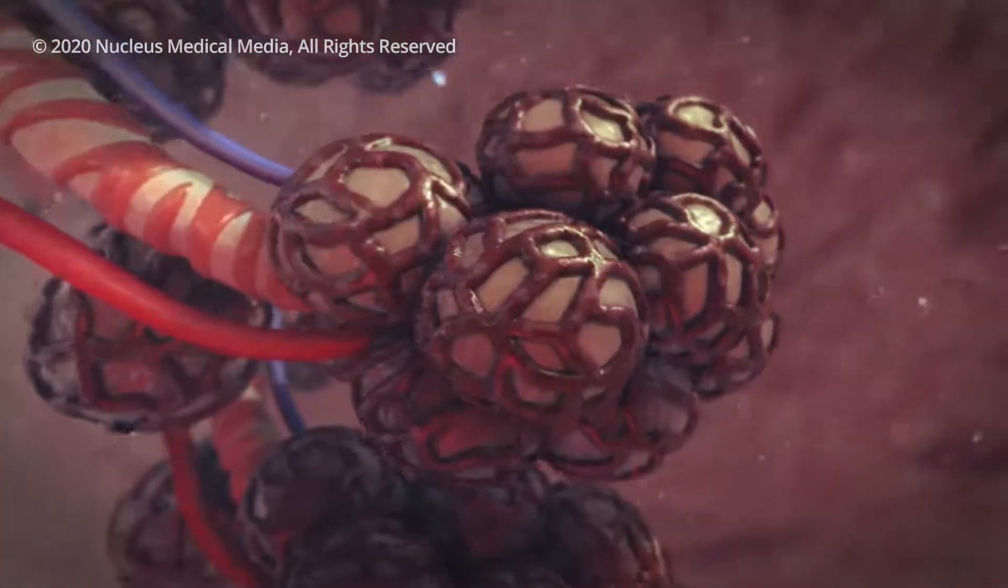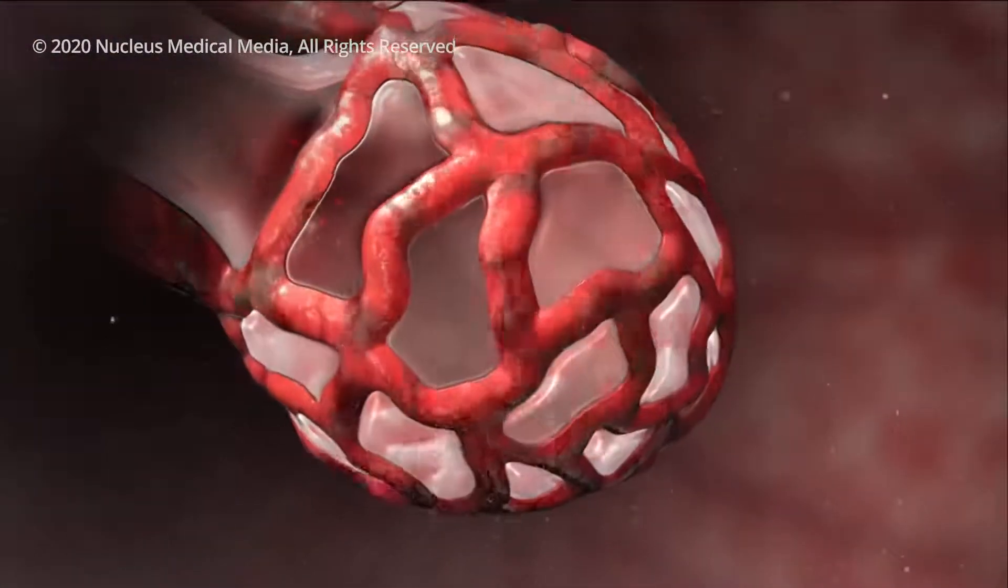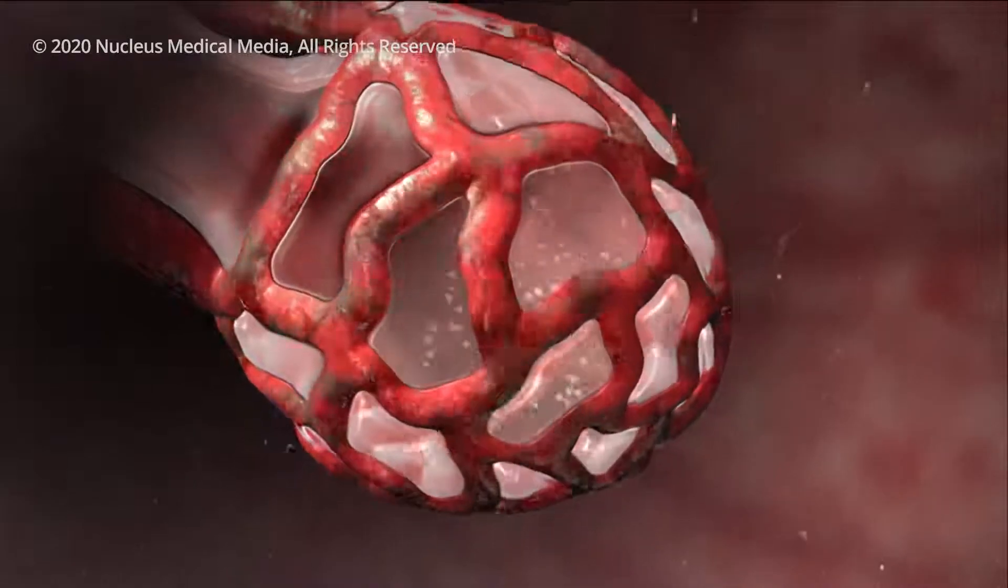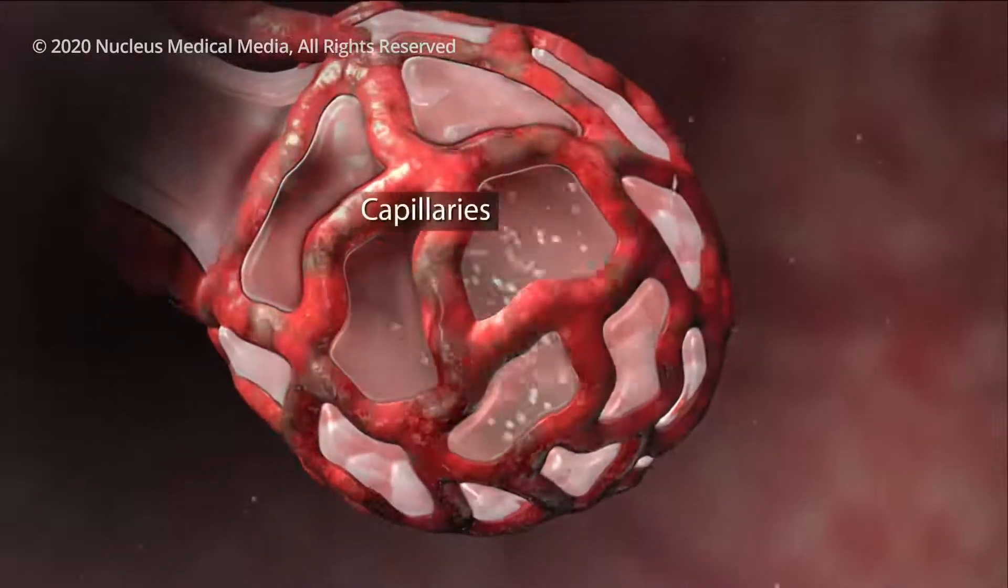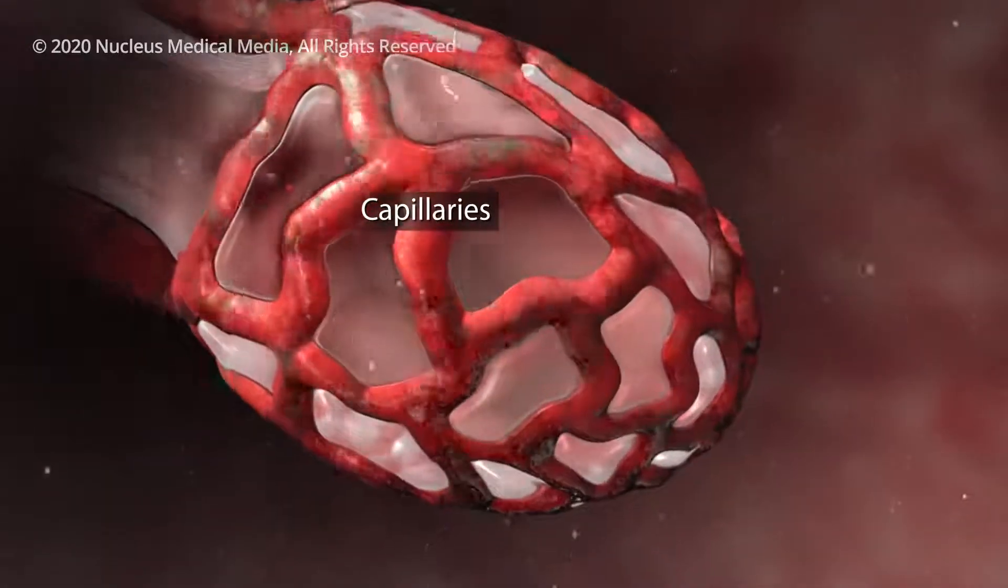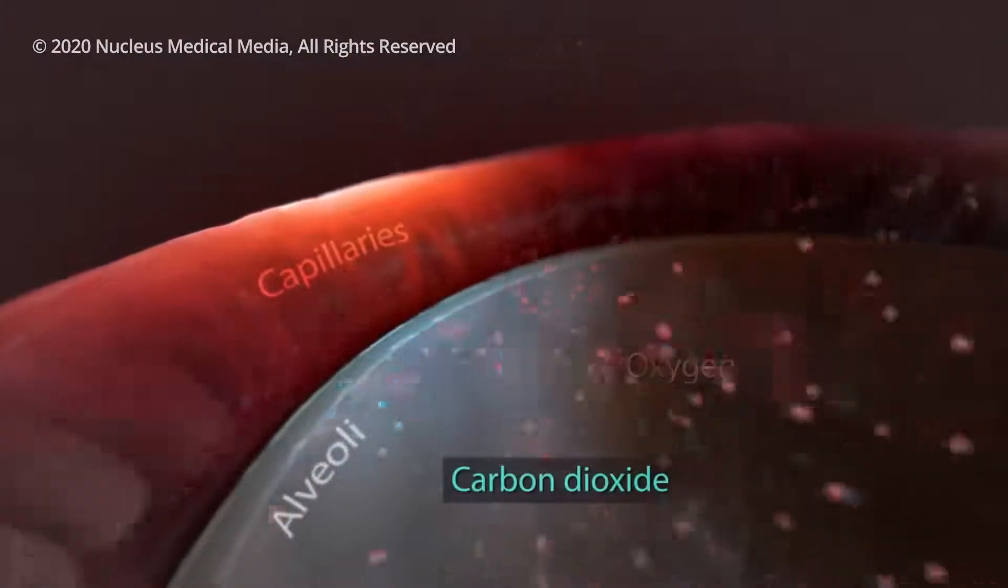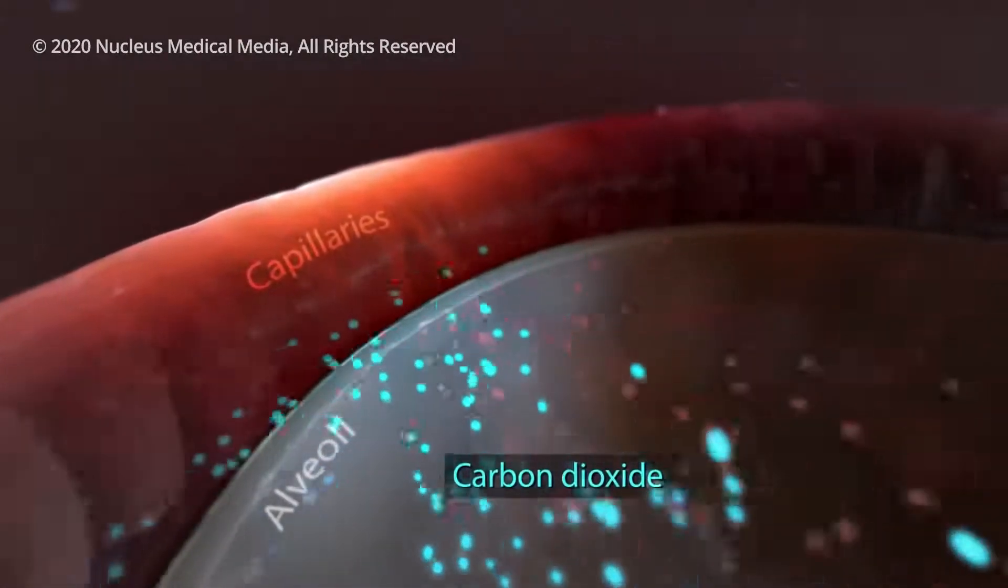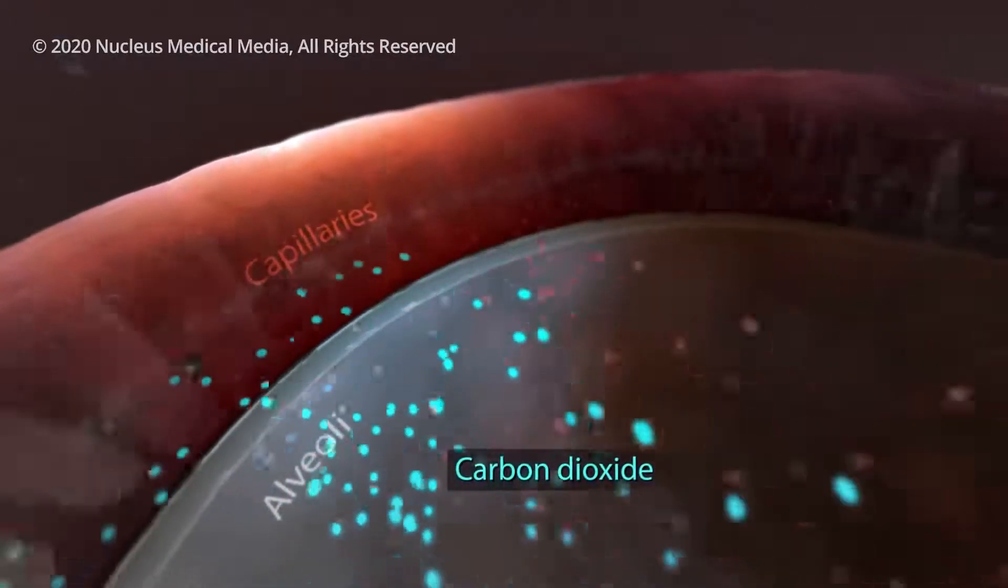Your airways and alveoli are flexible and springy. When you breathe in, each air sac inflates like a small balloon. And when you exhale, the sacs deflate. Small blood vessels called capillaries surround your alveoli. Oxygen from the air you breathe passes into your capillaries, and then carbon dioxide from your body passes out of your capillaries into your alveoli, so that your lungs can get rid of it when you exhale.